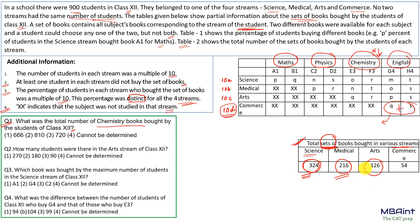Summing these up: 324 plus 216 plus 126 gives 666. So the answer to question one is 666. If you have just understood the language of the question, the first question is only two to three minutes of work.